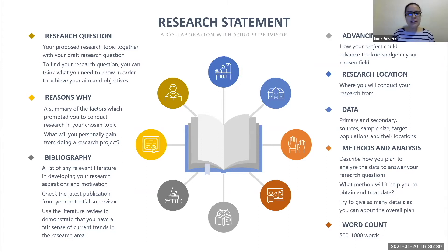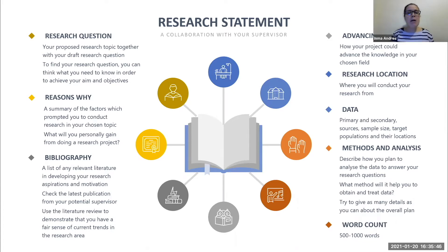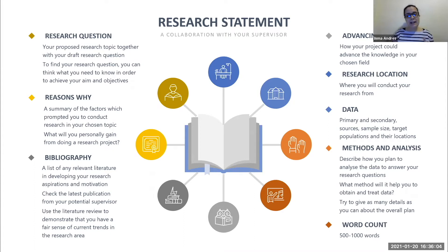Then you need to think about why you want to do a PhD. Some people will answer, 'I want a title in front of my name' — I would say not to say that. From my personal experience as a former PhD graduate, you need to think about how you would contribute to the research community and to society. How would you contribute? Are you going to address a problem that society will benefit from? It could be social, it could be economic, it could be science — anything that can help the community and society. Think about that.